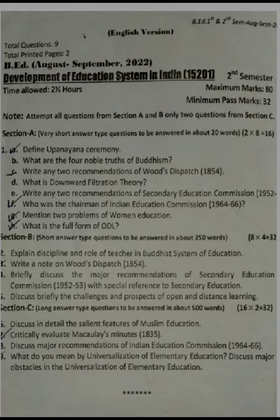Other short answer questions include: write a note on Wood's Dispatch 1854; briefly discuss the major recommendations of Secondary Education Commission 1952 to 53 with special reference to secondary education; and the last question in short answer type was: discuss briefly the challenges and prospects of open and distance learning.